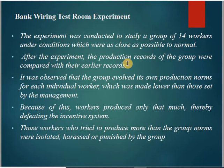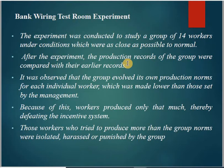The 14 workers made their own informal norms and started working according to those norms rather than working individually at full capacity. Workers who tried to produce more than the group norms were isolated, harassed, or punished by the group. This showed that group dynamics significantly influenced individual output.